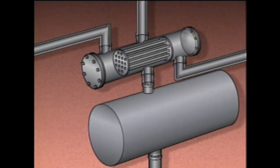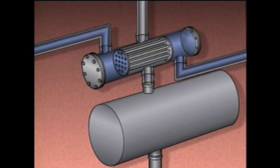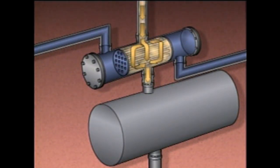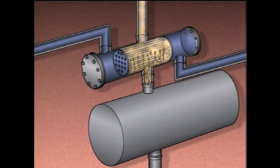During operation, on the tube side of the condenser, cooling water enters through the inlet head, passes through the tubes, and flows out through the outlet head. On the shell side, vapor passes through the inlet and flows around the tubes. When the vapor comes into contact with the cool surfaces of the tubes, heat is transferred from the vapor through the tube walls to the cooling water. As heat is transferred, the vapor cools and condenses on the tube surfaces. The condensed vapor or distillate drips off the tubes and falls to the bottom of the shell, then flows through the distillate outlet and into the receiver.